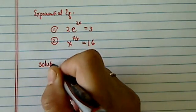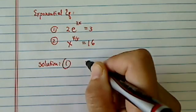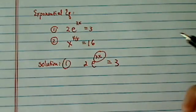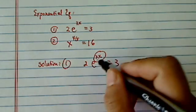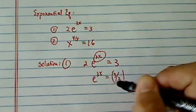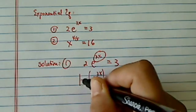Solution. For the first one, we have 2e to the 3x equals 3. When a variable is on the exponential part, we do need to use natural log to bring this one down first. But before we do that, let's divide the two over first so we can take natural log on both sides.